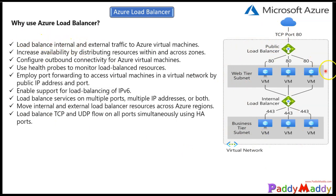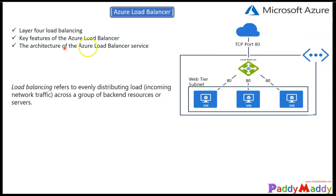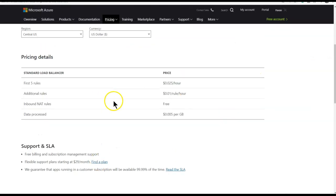You can use the load balancer in either internal or external scenarios based on your requirements. It increases availability by distributing load across resources, Azure regions, and availability zones. You can configure outbound connectivity for your virtual machines, use health probes to monitor resource health, employ port forwarding to access virtual machines within a VNet for a specific public IP and port, and Azure load balancer also supports IPv6. This entire configuration works at Layer 4.